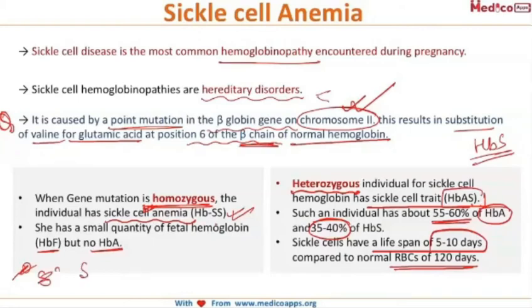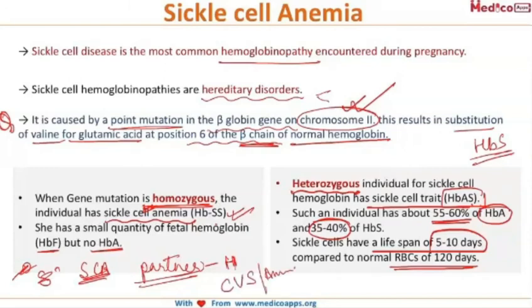If a pregnant female has sickle cell anemia, her partner should also be tested. If the partner is found to be heterozygous for sickle cell, there are chances for the fetus to be affected. In that case, prenatal diagnosis is done by CVS or amniocentesis, and if the fetus is also diagnosed with a major hemoglobinopathy, termination of pregnancy is offered to the patient.